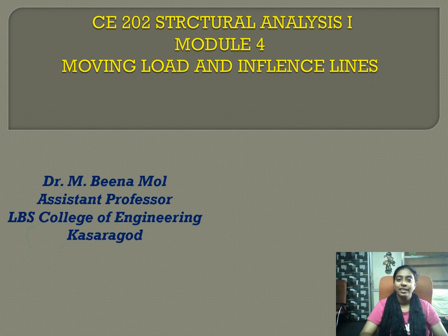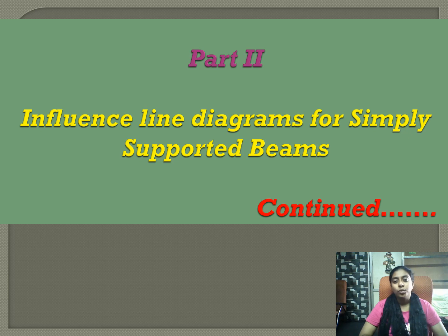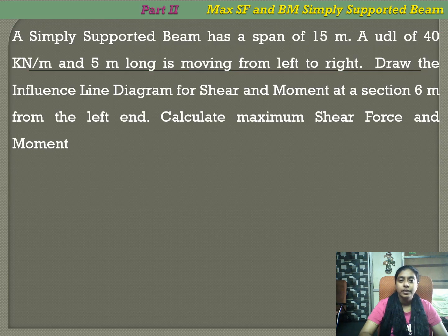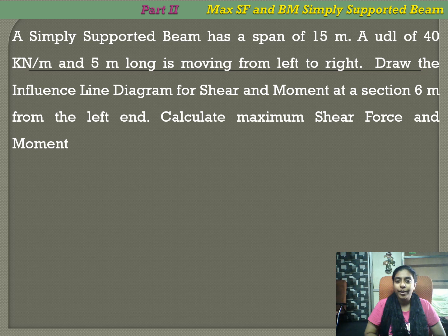Hello everybody, this is our sixth video for Module 4 on moving loads and influence lines. In this video we are going to solve a simply supported beam with a UDL moving from left to right, where the UDL is shorter than the span. The problem: a simply supported beam has a span of 15 meters, a UDL of 40 kN/m and 5 meters long is moving from left to right. Draw the influence line diagram for shear and moment at a section 6 meters from the left end.